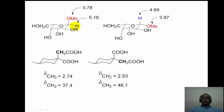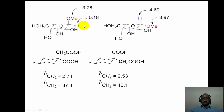The equatorial anomeric hydrogen comes at a higher delta value of 5.18, compared to the axial hydrogen which comes around 4.69. We can thus distinguish between the equatorial and axial isomers from the chemical shift value. Additionally, the methoxy group plays a role: the axial methoxy group comes at a lower delta value compared to the equatorial methoxy group, around 3.97, due to the anisotropic effect of the carbon-oxygen bond.